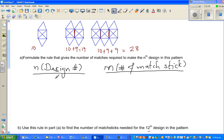So in the first design, you have 10 matchsticks. In the second design, I have 19. In the third, I have 28. So I want you to look at the number pattern here. What's the change in the number of matchsticks?